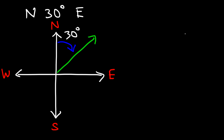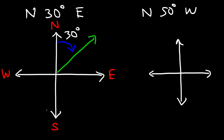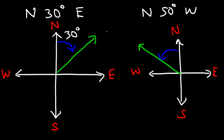Now, for example, let's say if we have north, 50 degrees west, or 50 degrees west of north. Go ahead and draw a picture that corresponds to that. Feel free to pause the video. So we're going to start with the north line, and then we're going to go 50 degrees towards the west. So we're going to have a line in this region. Here we have a clockwise rotation, and here it's a counterclockwise rotation.